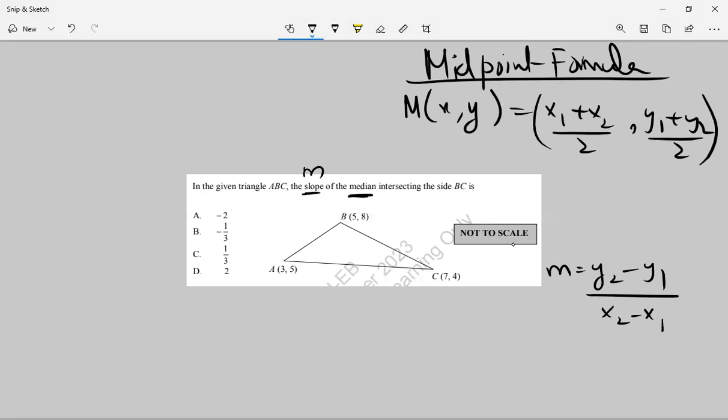They are asking for the slope that's intersecting the side B and C.